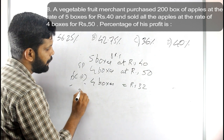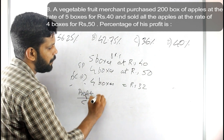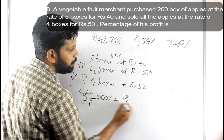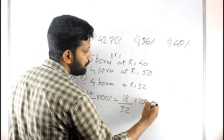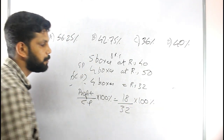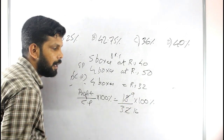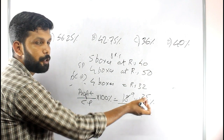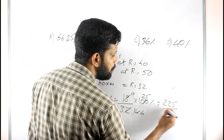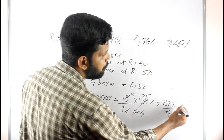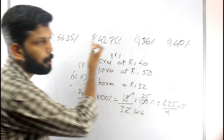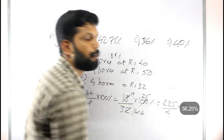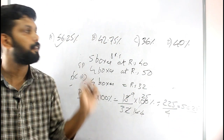The profit percentage is profit divided by CP into 100. The profit is 50 minus 32 equals 18. CP is 32. So profit percentage is 18 divided by 32 into 100, which simplifies to 56.25%. Option A is the right answer.